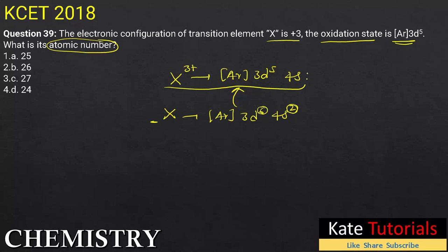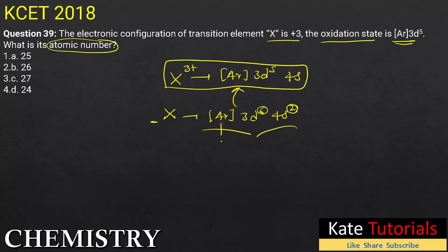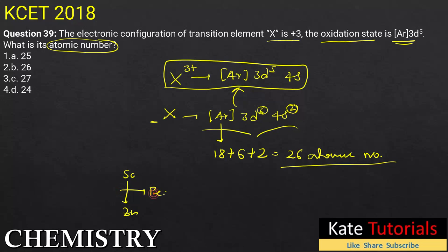Argon has 18 electrons; in 3d there are 6 electrons and in 4s there are 2 electrons — total 18 + 2 + 6 = 26. So the atomic number is 26. If you know the electronic configuration of scandium to zinc, you can identify this element as iron (Fe), with atomic number 26 and configuration [Ar]3d⁶4s². Option B is the correct answer for question 39.